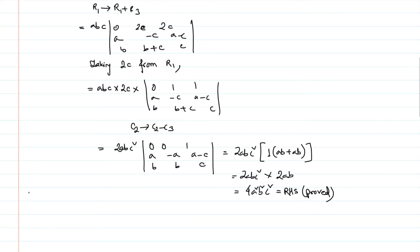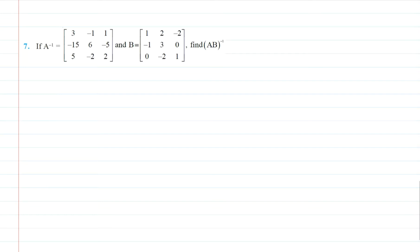Now coming to the next question, we have question number 7. We are given A inverse and B, and we need to find AB whole inverse. Now you know that AB whole inverse is equal to B inverse A inverse. I have discussed this in a previous video.